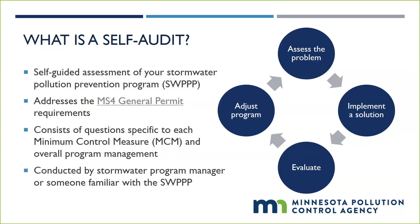The self-audit follows the adaptive management principles highlighted on this slide. The overarching problem has already been assessed: pollutants can enter the stormwater within your MS4 from a variety of sources. Solving the problem in your community is the development and implementation of your SWPP, which is designed to reduce or minimize pollutants entering your MS4. The self-audit comes into the adaptive management cycle as the evaluation component, allowing you to evaluate the practices you've implemented to see what is working and what isn't.